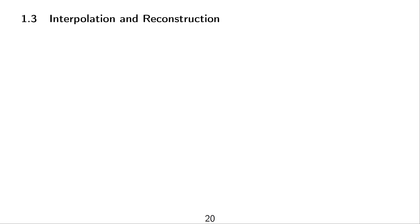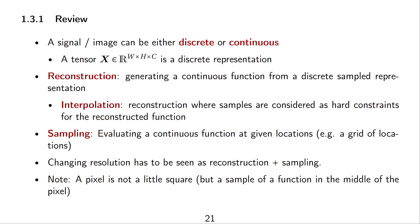Let's talk about interpolation and reconstruction. A signal, an image, or a function can be either discrete or continuous, and it's important to distinguish between these two representations. For example, a tensor x that has a width, a height, and a number of channels is a discrete representation.